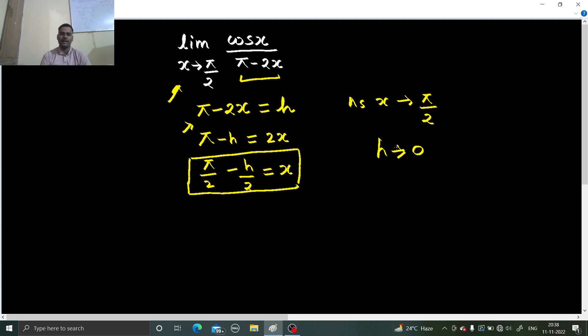That is what our main focus was, to again get back limit where variable is tending to 0. Now we are successful in that. So limit instead of x tending to pi by 2, now we have this h tending to 0.